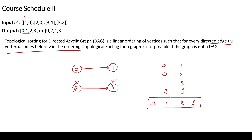Topological sorting is not possible if the graph is not a DAG — a Directed Acyclic Graph. The graph must be directed and must not have a cycle. Let's understand why a cycle makes it impossible — let me clear the screen and consider that example.